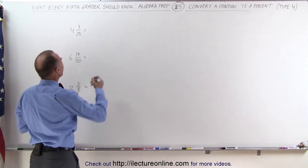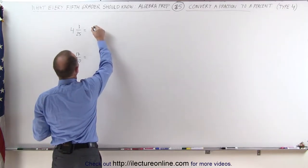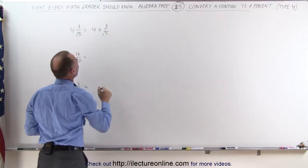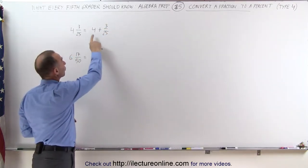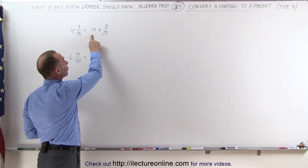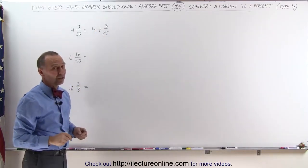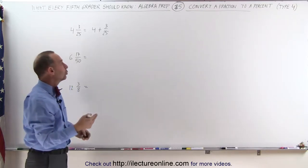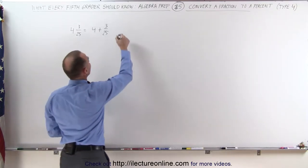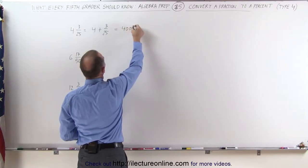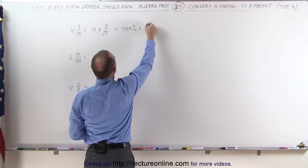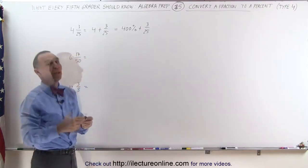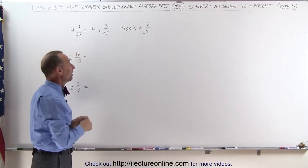Well, it turns out you can think of 4 and 3/25 as 4 plus 3/25. In other words, we can first convert the 4 to a percentage and then convert 3/25 to a percentage. Since 1 equals 100%, 4 equals 400%. This can then be written as 400% plus 3/25, and now all we have to do is convert 3/25 to a percent.